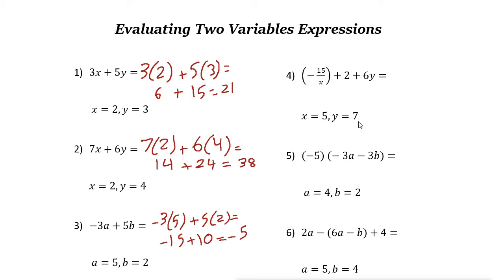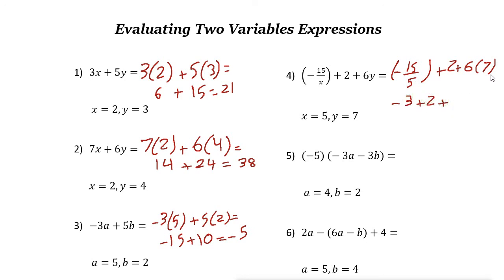Next, with x equals 5 and y equals 7, the expression is negative 15 over x plus 2 plus 6y. Substituting: negative 15 over 5 plus 2 plus 6 times 7 gives negative 3 plus 2 plus 42. Simplifying, negative 3 plus 2 is negative 1, plus 42 equals 41.